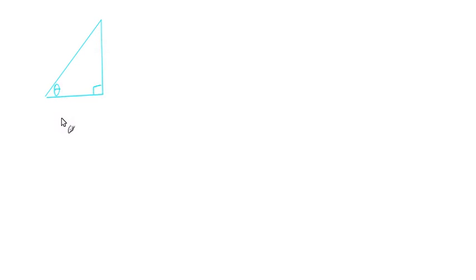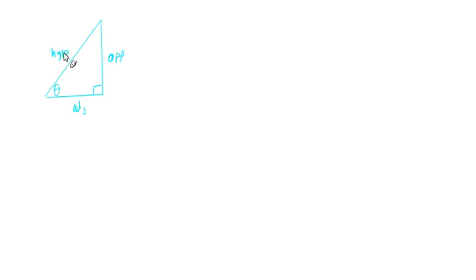We're now into section 4.4. Let's draw a quick triangle to start us out. If we take this angle here, we can define all the trig functions — sine, cosine, tangent, secant, and so forth — in terms of this angle, expressed using the opposite side, the adjacent side, and the hypotenuse. Now let's put this triangle on the xy plane.